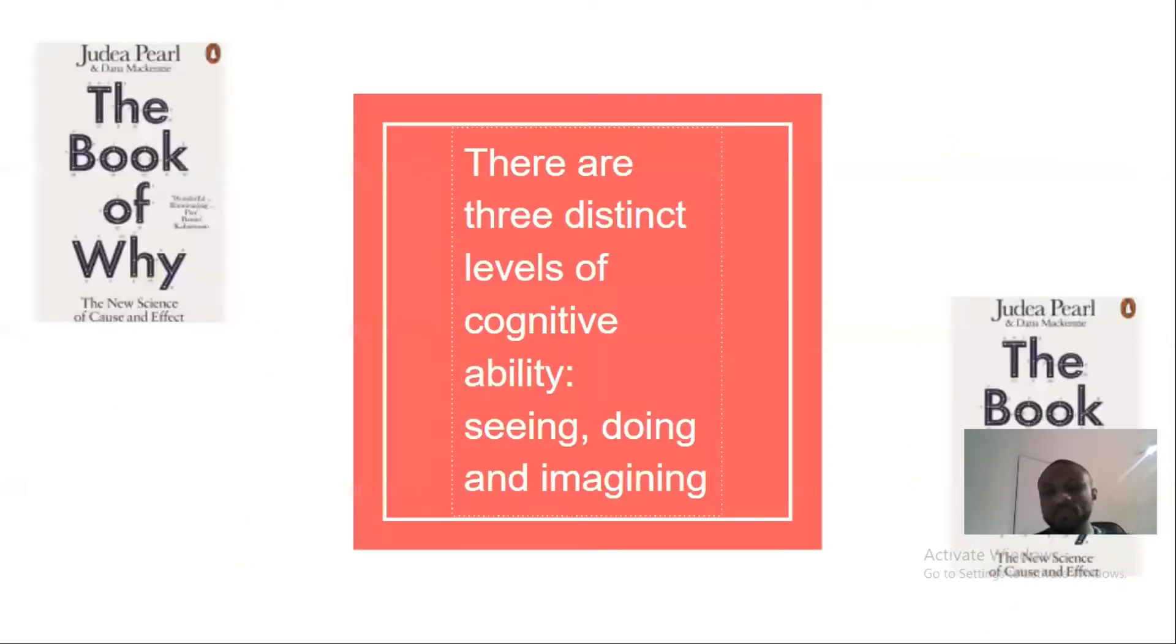So generally with The Book of Why, one of the key things I learned was there are three levels of cognitive ability. There's seeing, there's doing, there's imagining. So seeing is the first level, doing is the next level, and imagining is the topmost level of our cognitive ability.